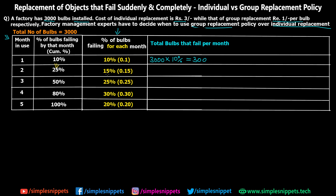For the second month, 15% of the total bulbs are going to be failing. But in the first month we already replaced 300 bulbs — so those 300 bulbs are new, and for them it is not the second month but the first month. So for them the percentage of bulbs failing is 10%, not 15%. We have to separately calculate the failure rate for those 300 bulbs using the first month's percentage. So for the second month: 3000 × 15% + 300 × 10% = 480 total failing bulbs.